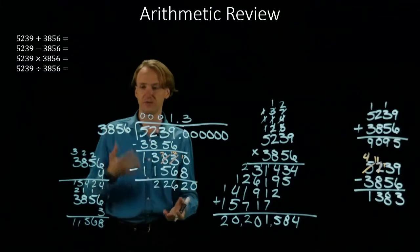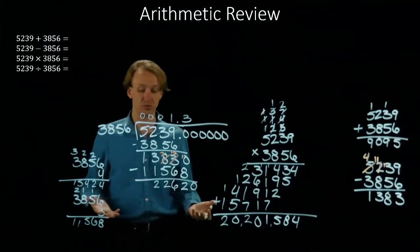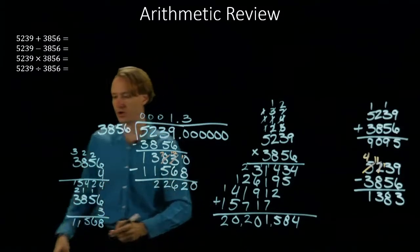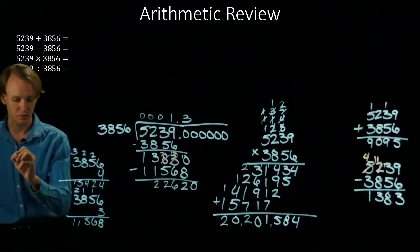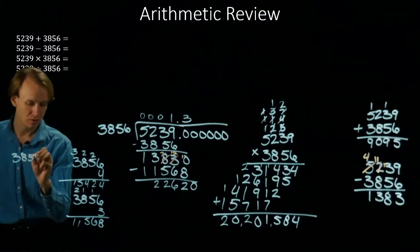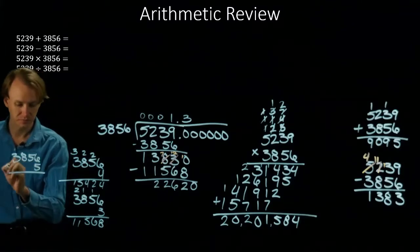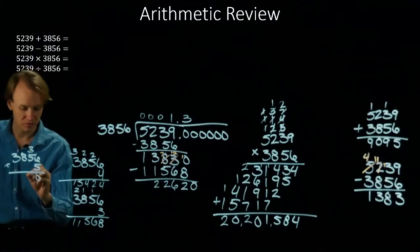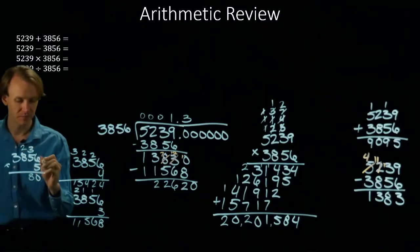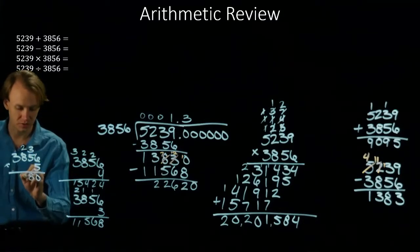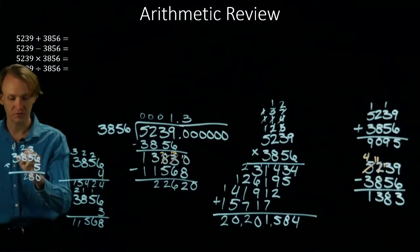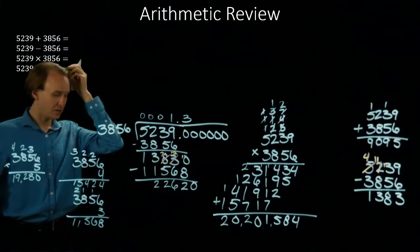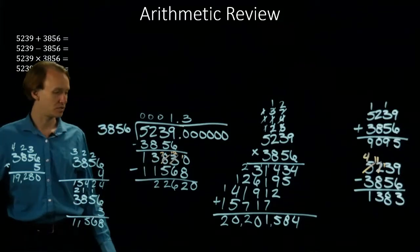Now I need to know how many times 3856 goes into 22,620. And it should be at least 5 times. So we'll try calculating for 5. So 3856 times 5. 6 times 5 is 30. 5 times 5 is 25. Plus 3 is 28. 5 times 8 is 40. Plus 2 is 42. 5 times 3 is 15. Plus 4 is 19.